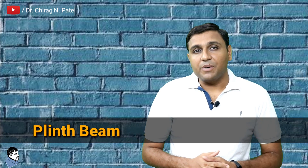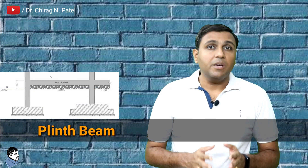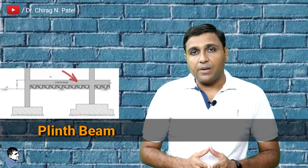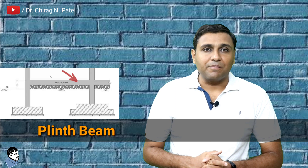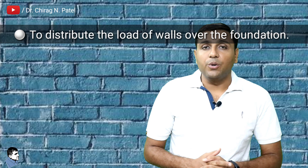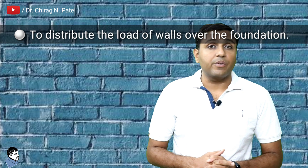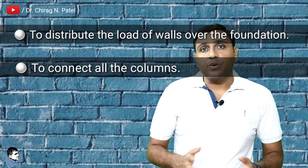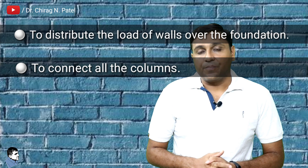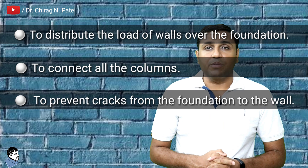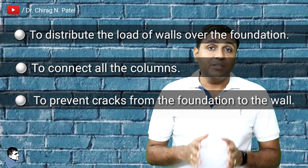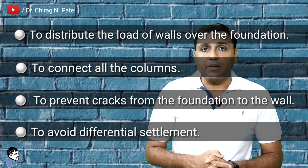The second important term is plinth beam. The beam which is provided at the plinth level is called a plinth beam. In a frame structure, the plinth beam is the first beam constructed after the foundation. The purpose of providing the plinth beam is to distribute the load of walls over the foundation of the building, to connect all the columns, to prevent cracks from the foundation to the wall, and to avoid differential settlement.